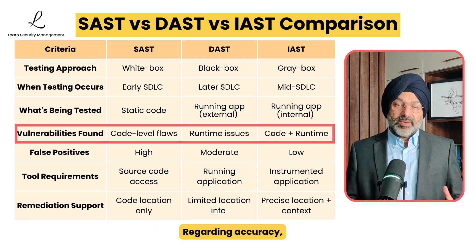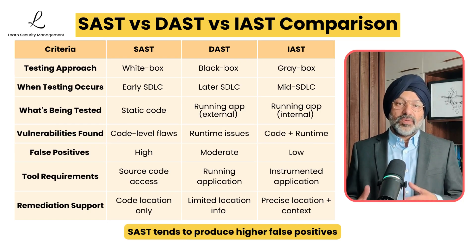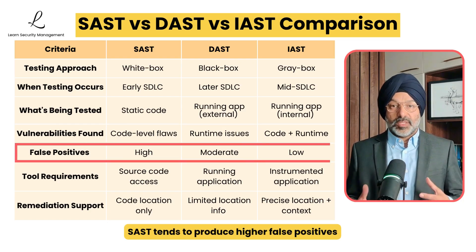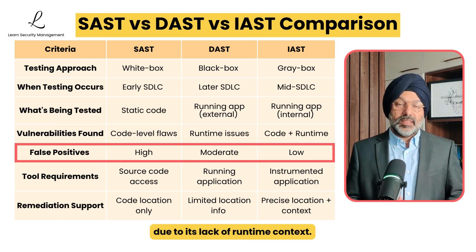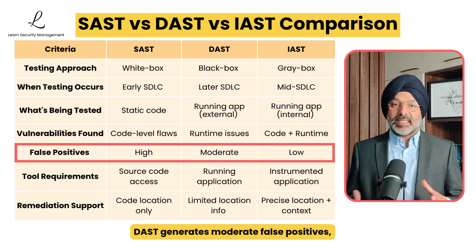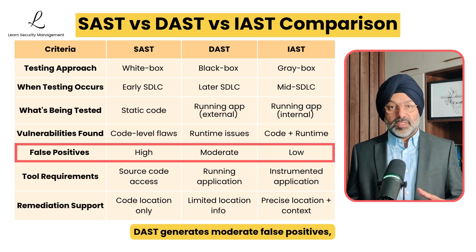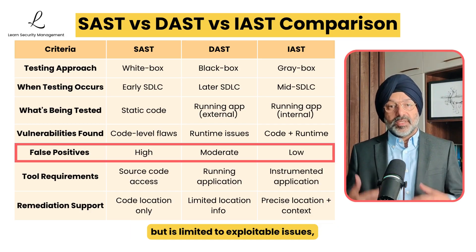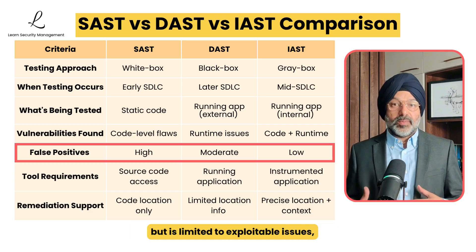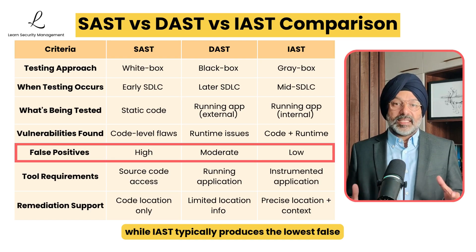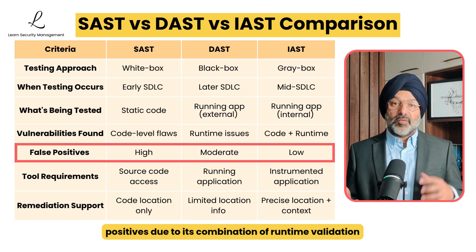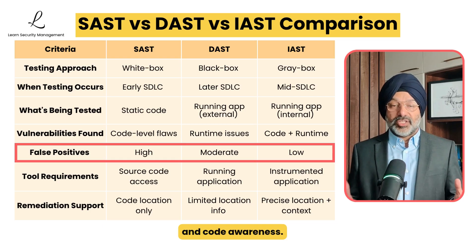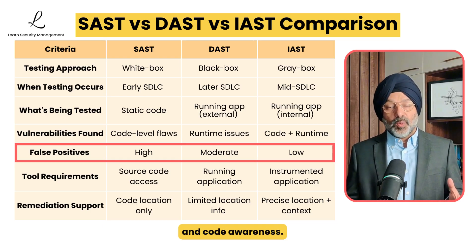Regarding accuracy, SAST tends to produce higher false positives due to its lack of runtime context. DAST generates moderate false positives but is limited to exploitable issues. While IAST typically produces the lowest false positives due to its combination of runtime validation and code awareness.